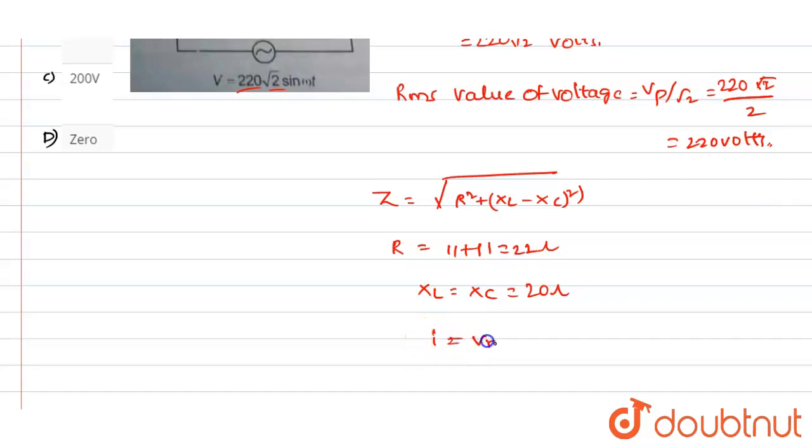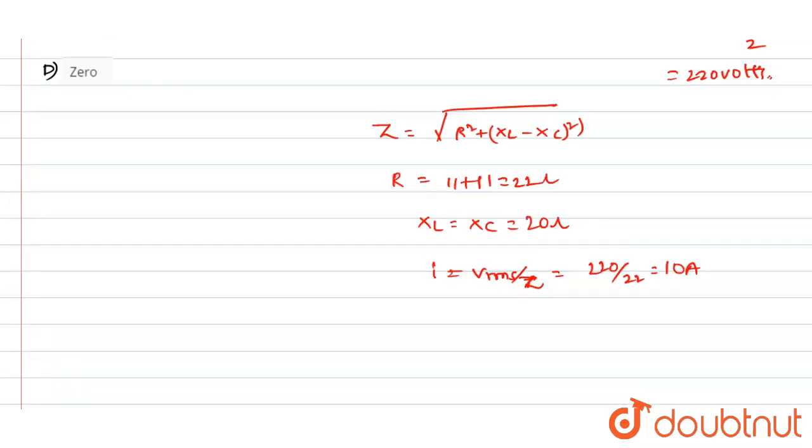Now I value will be equal to Vrms divided by Z value. So we will write 220 divided by 22, which is equal to 10 amps.